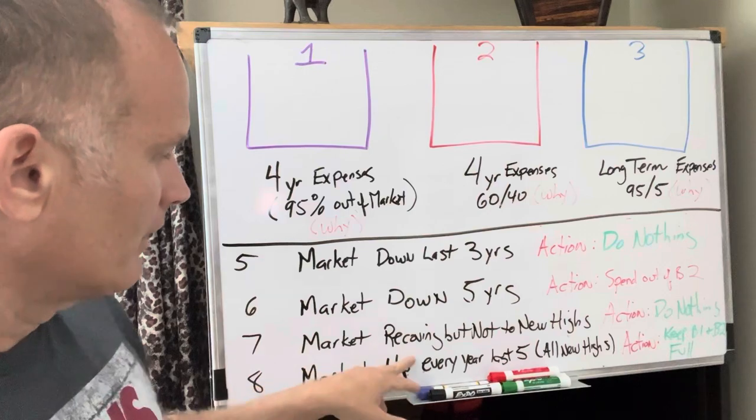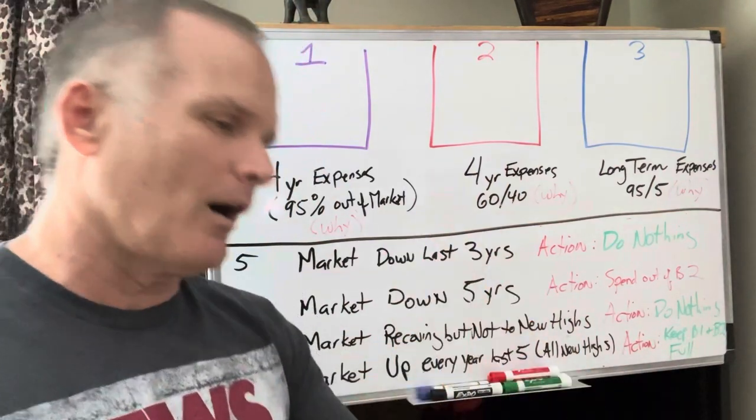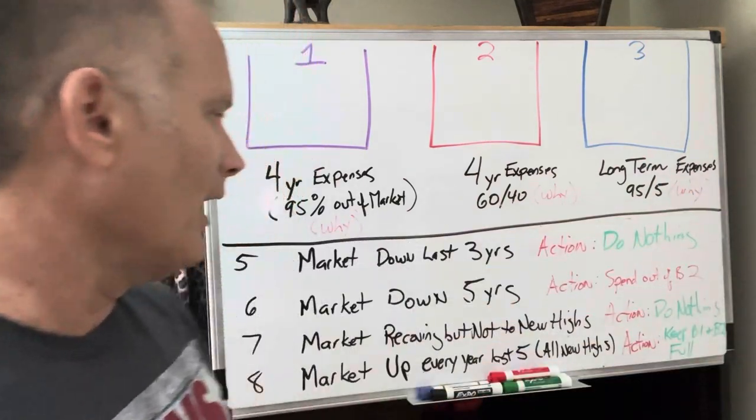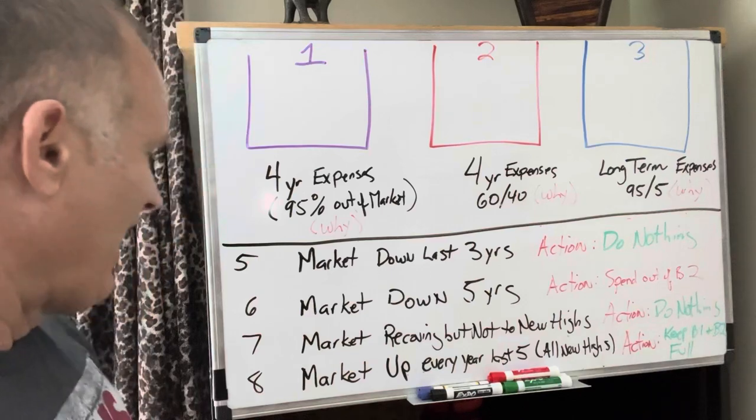Example number seven, the market is recovering, but it has not reached new highs. So it dropped down 40%. It's come back, but it's not making new highs yet. What action do you take? Do nothing.